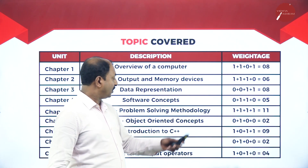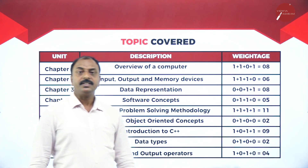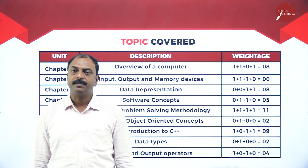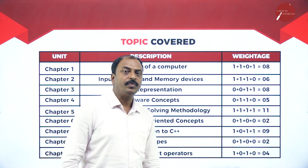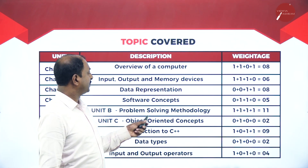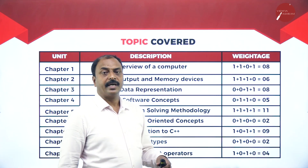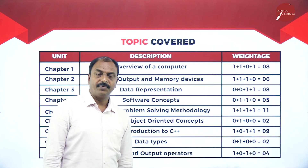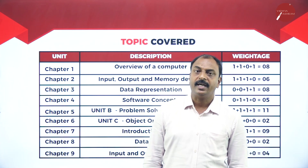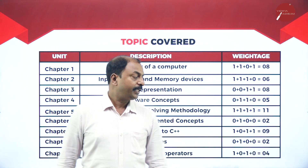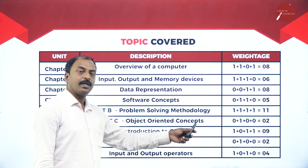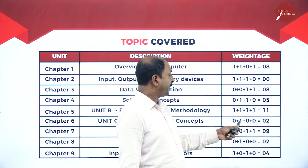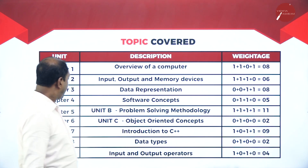Chapter six is 'Object Oriented Concepts,' also known as OOP. This is another method of programming. We are going to learn the definition, characteristics, advantages, applications, and limitations of object-oriented programming. The weightage of this chapter is two marks — you will get one two-marks question.